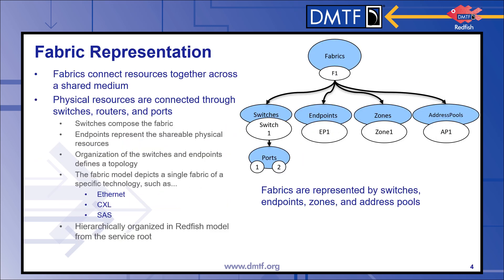Fabrics connect resources together across a shared medium providing connectivity to all the resources using a set of protocols. These resources are connected physically using switches, routers, and ports that connect the resources to the fabric. This bubble diagram on the right depicts the components of the fabric model. A fabric has switches, endpoints, zones, and address pools. Switches are connected to endpoints via ports. Endpoints represent the components of the fabric, and zones and address pools represent constraints.